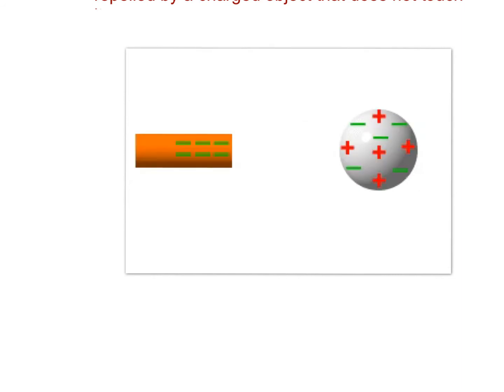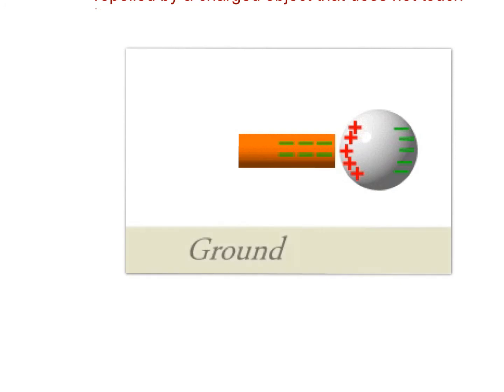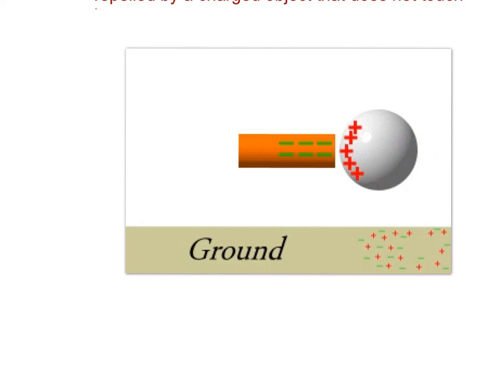In a final example, the negative rod again causes a separation of charge within the sphere — the right side becomes negative, the left side becomes positive. This time we add a ground wire. In grounding, the electrons travel down the wire away from the object into the ground. The ground wire is then removed, and the object keeps a positive charge.